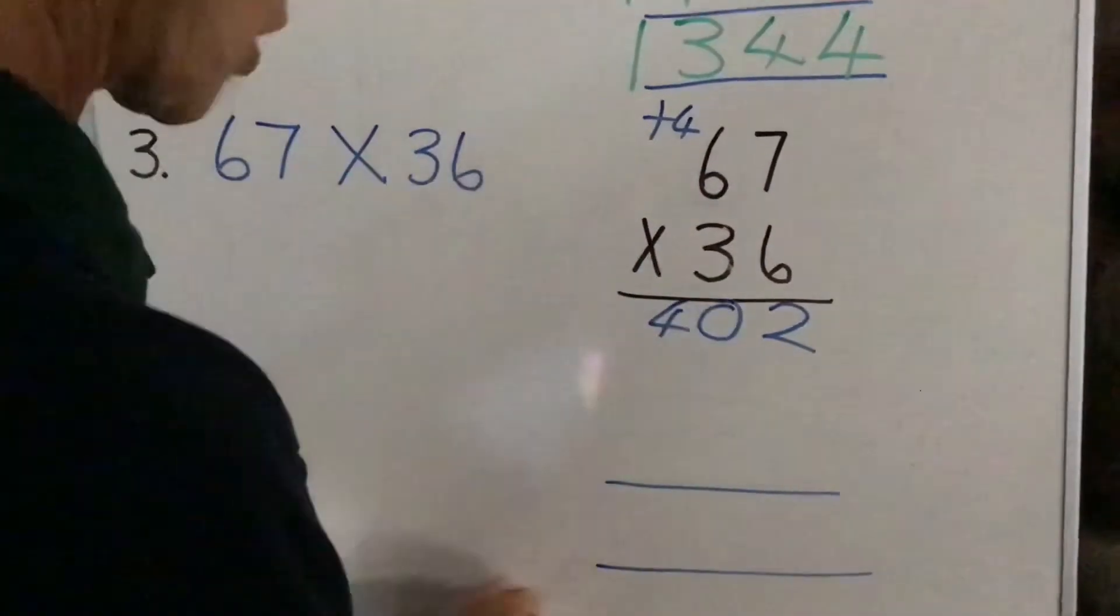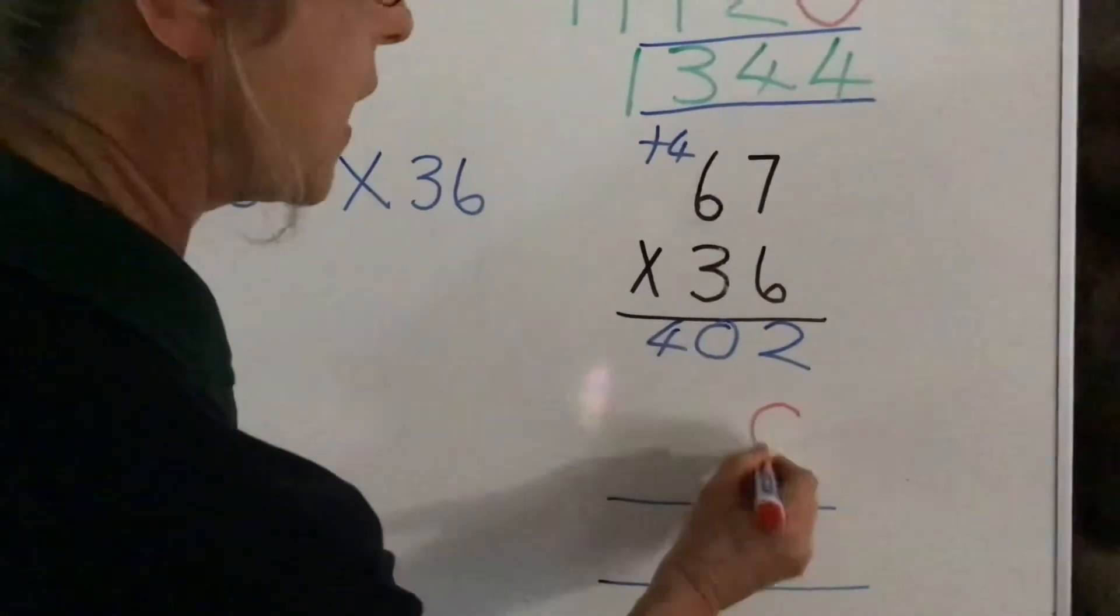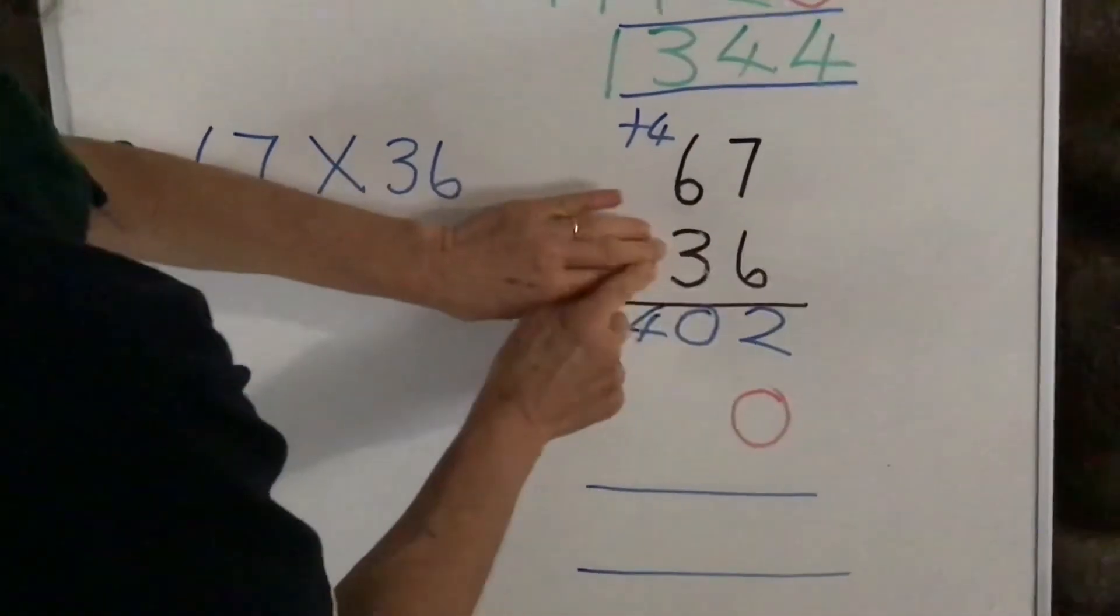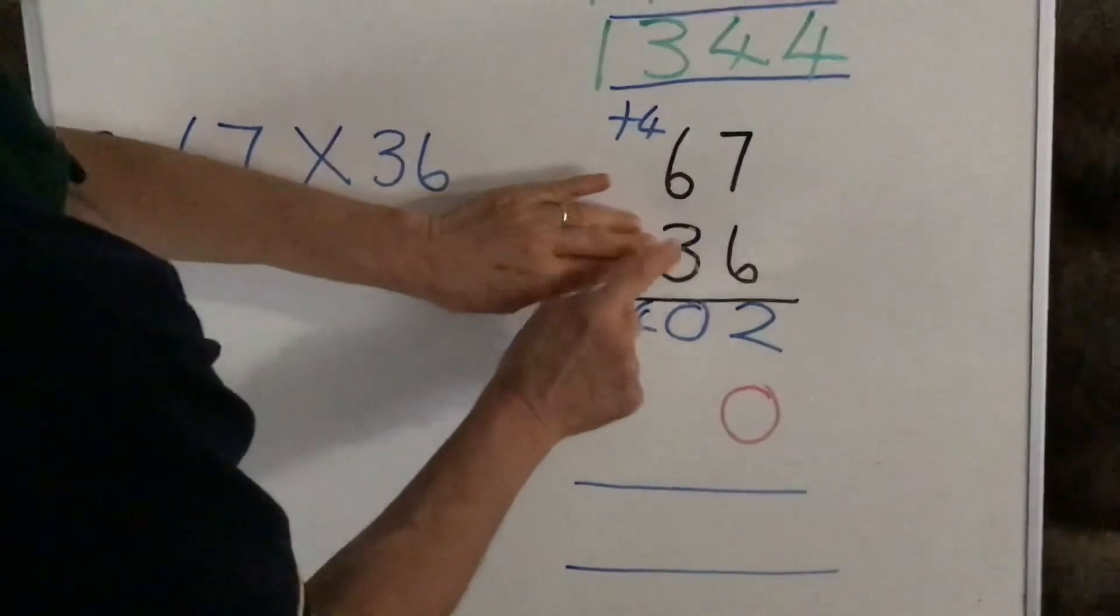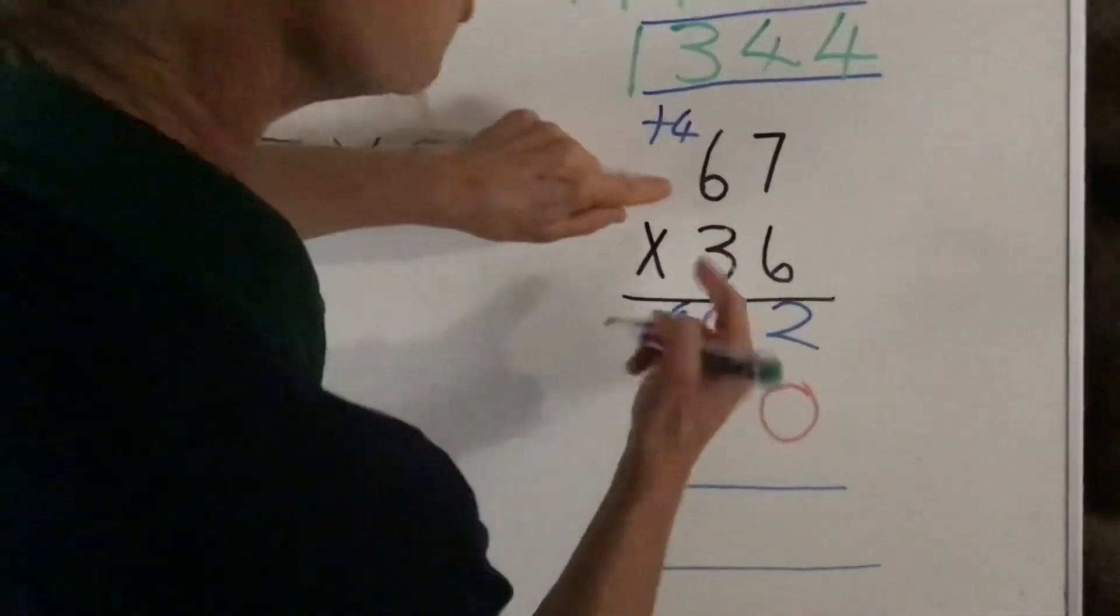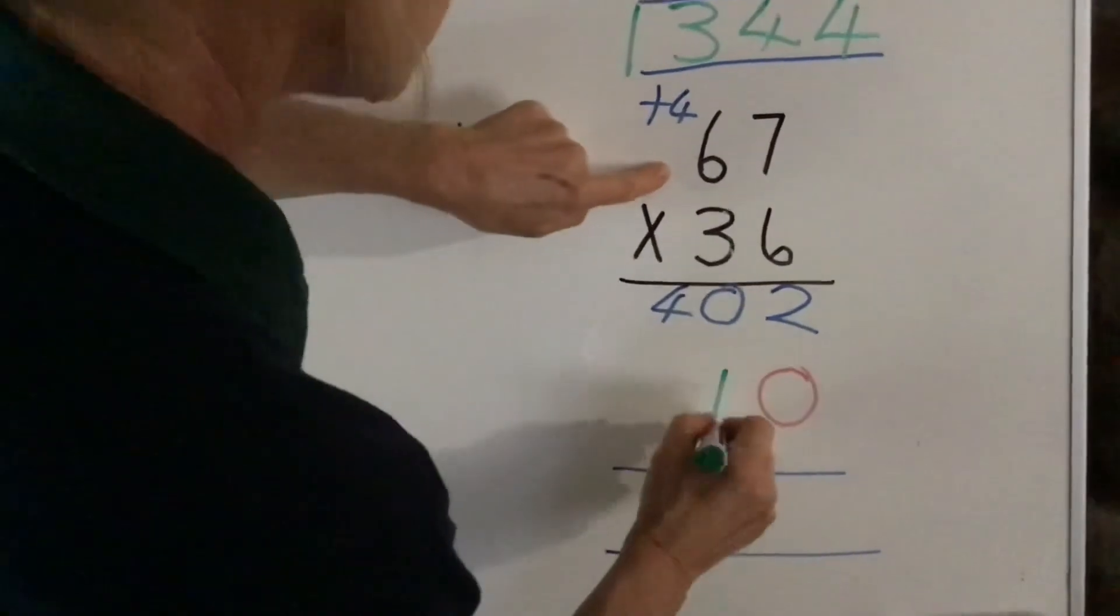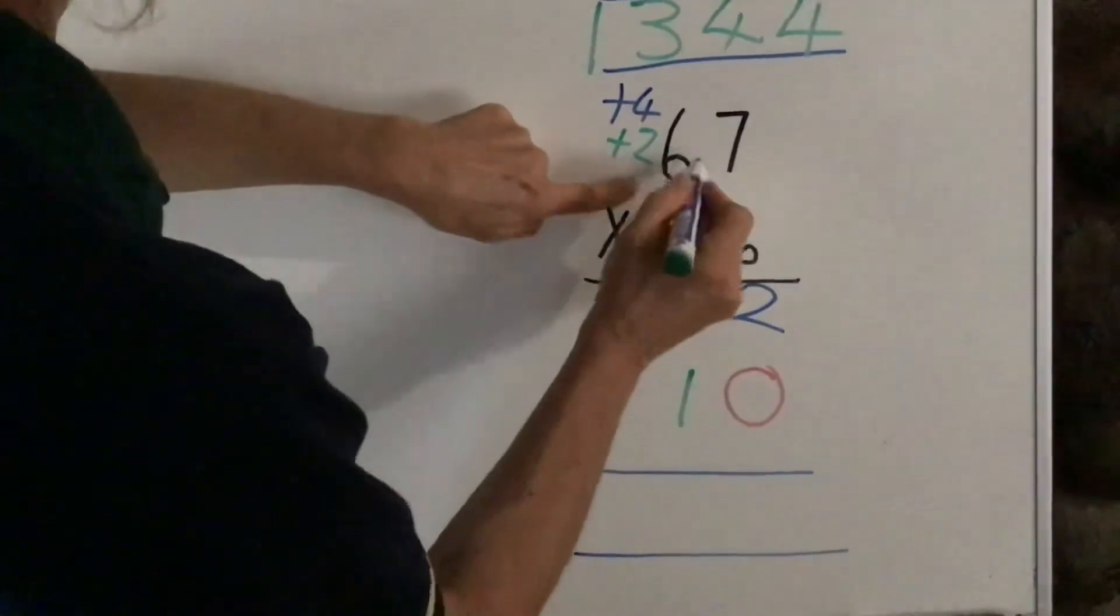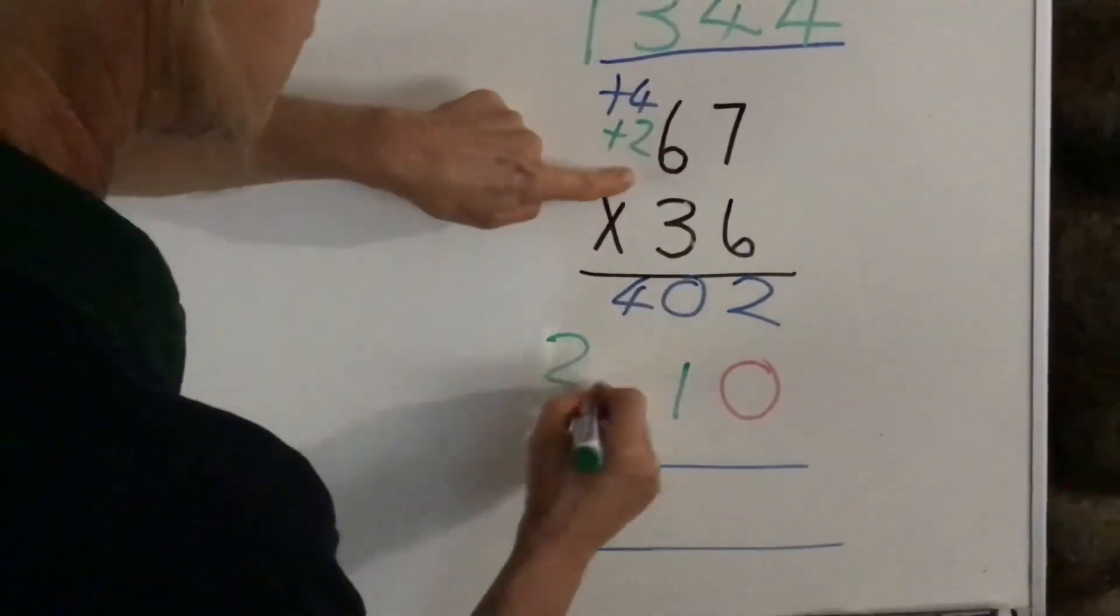And then the next row, we always put our zero in red, so it's very clear that we've got it there. And we go to our 10 here, but now it becomes a unit. Three times seven is 21. Put down our unit, carry our 10. And we say three times six is 18, plus two is 20.